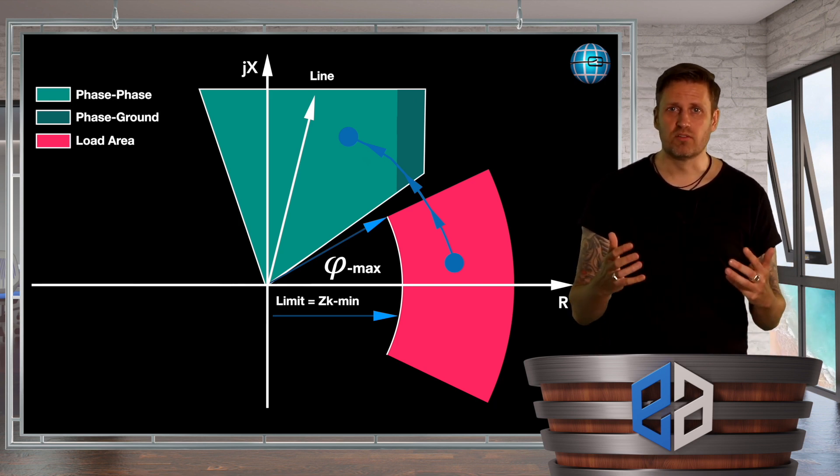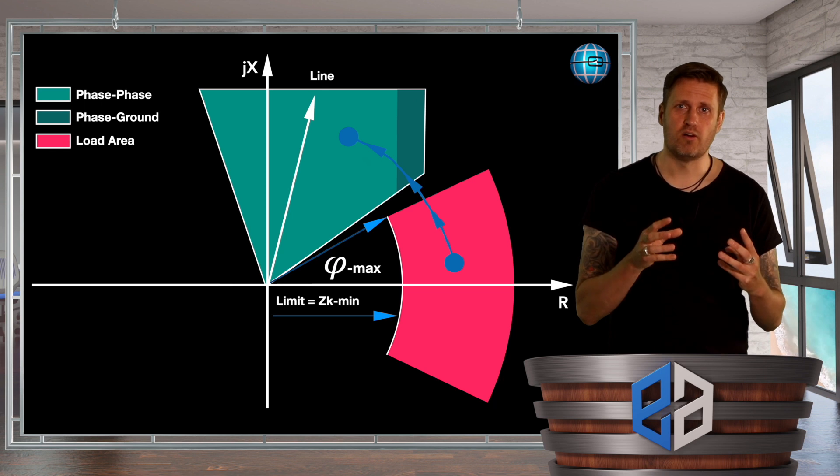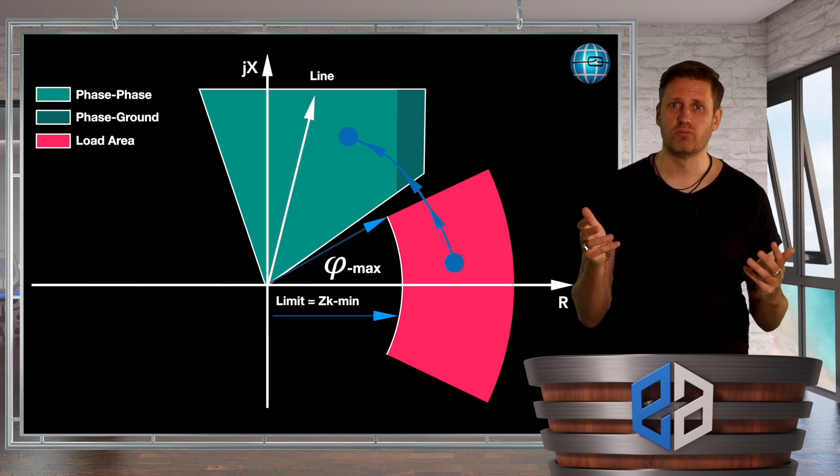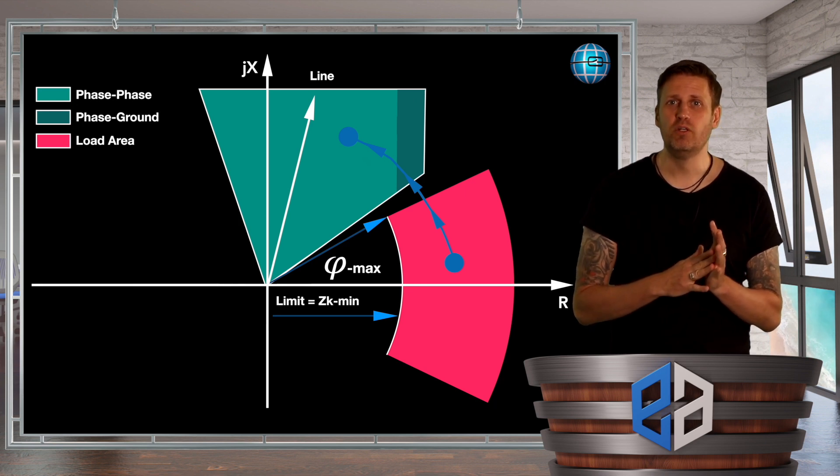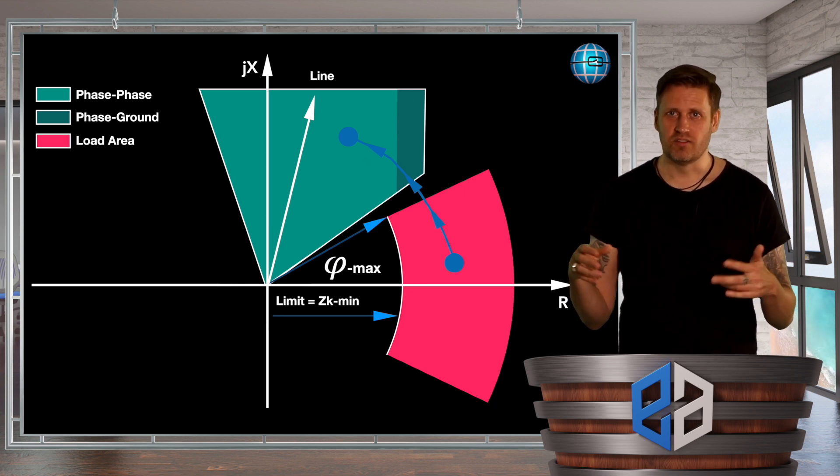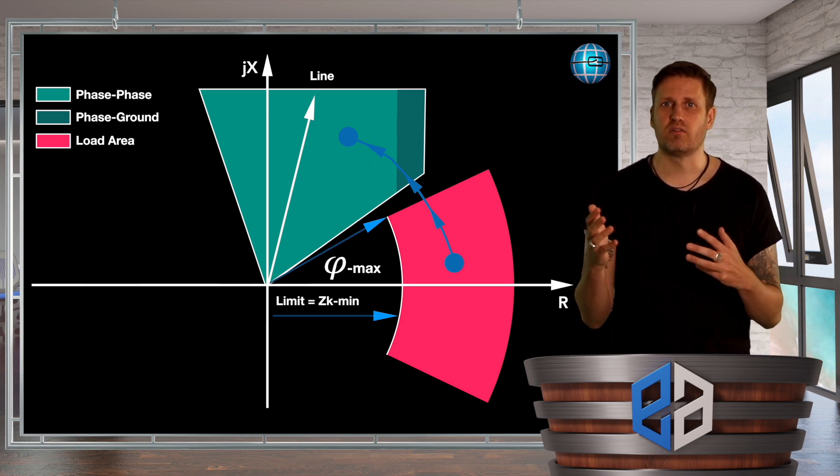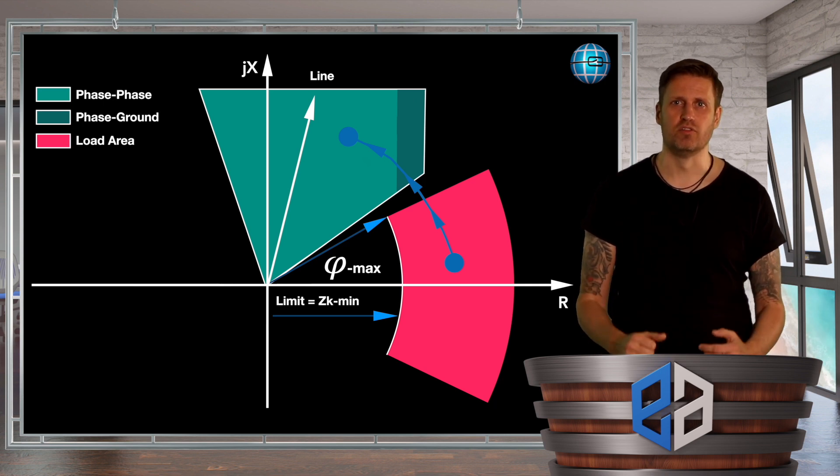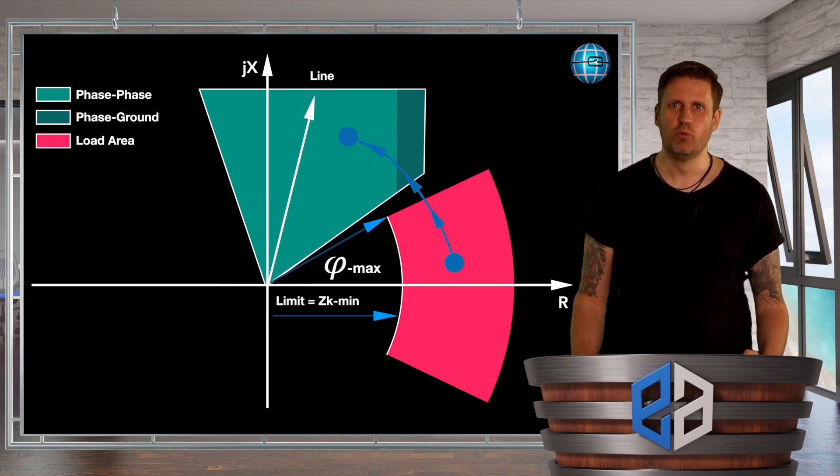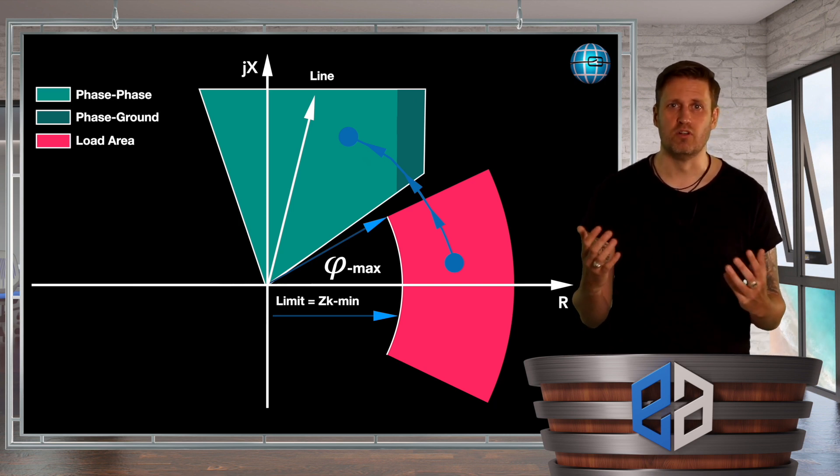However, because we inform the relay of the system-specific load characteristic, taking the worst case into account, this can be safely separated from the tripping area. It is important to know that the section of the load characteristic for the face-to-face pickups and the face-to-earth pickups can usually be activated and parameterized separately. And this brings us to the next question. Does it even make sense to set a load cutout for the face-to-earth loops? Well, the fact is that the load basically contains no zero sequence current.